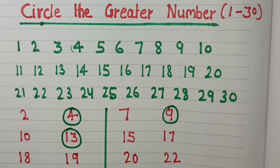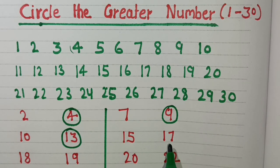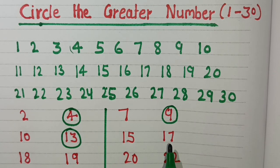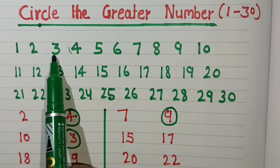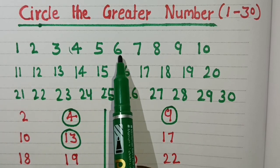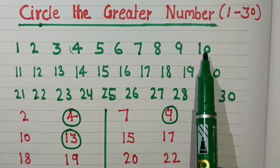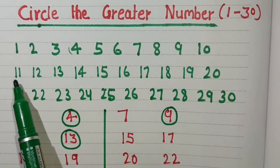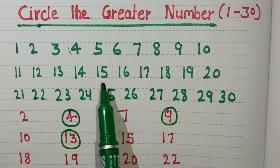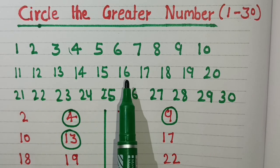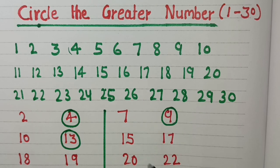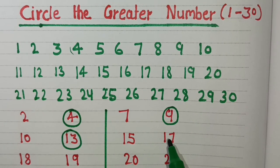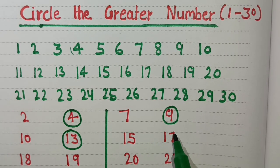Next numbers are 15 and 17. Let's do counting: 1, 2, 3, 4, 5, 6, 7, 8, 9, 10, 11, 12, 13, 14, 15, 16, 17. So 17 is the greater number. We will circle number 17.